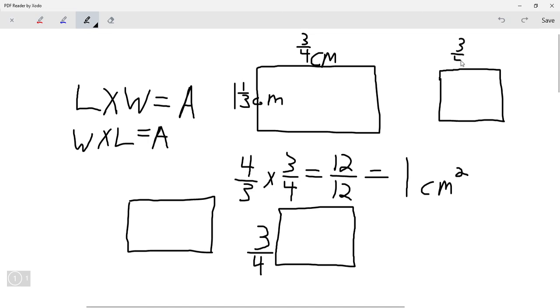That means the area just becomes 3 fourths times 3 fourths, which equals 3 times 3 is 9, and 4 times 4 is 16. So it would be 9 sixteenths.